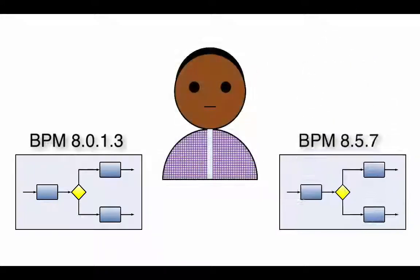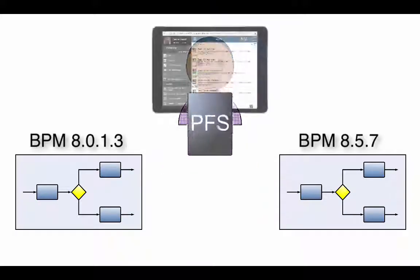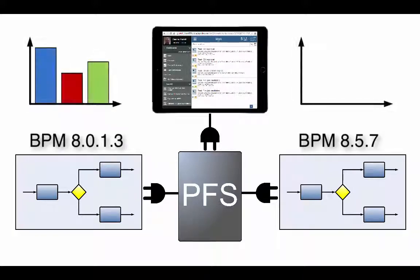Adam installs a new instance of BPM 8.5.7 so that new processes can be rolled out without having to migrate the existing processes first. The original processes are also deployed to BPM 8.5.7 so that any new instances are started on the new environment.